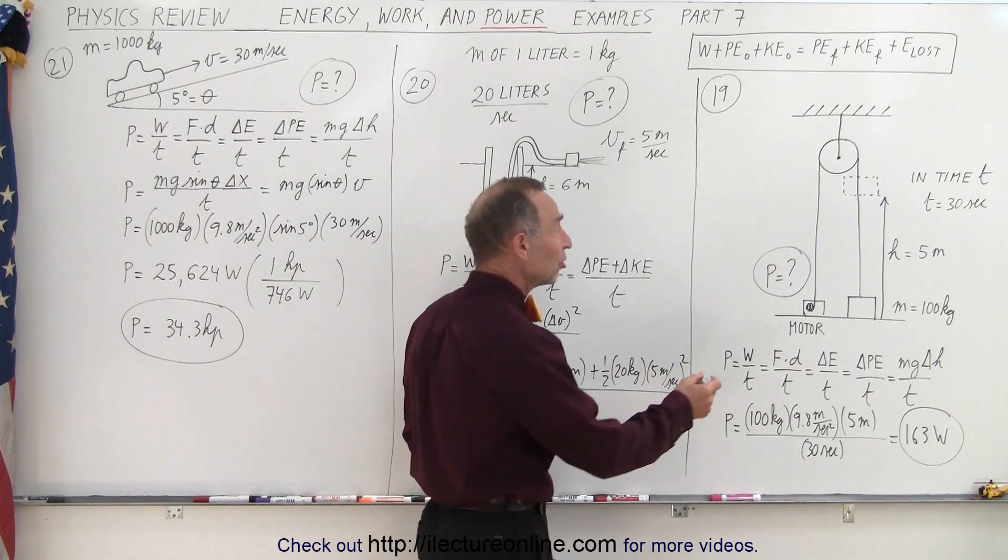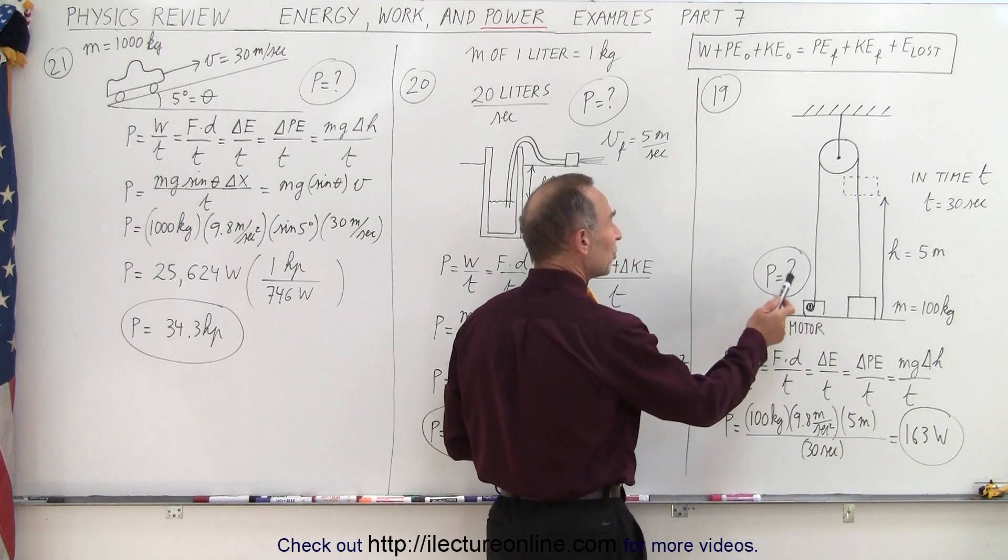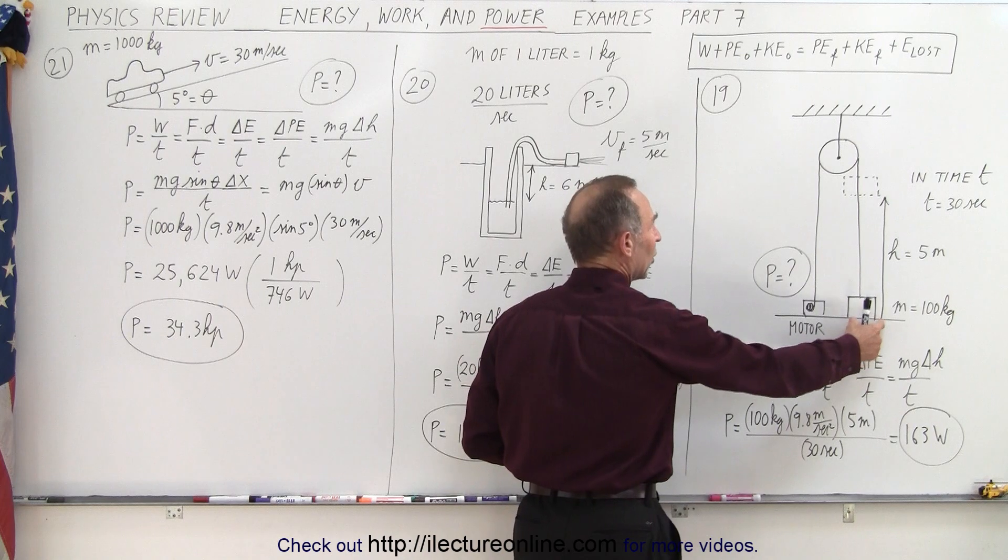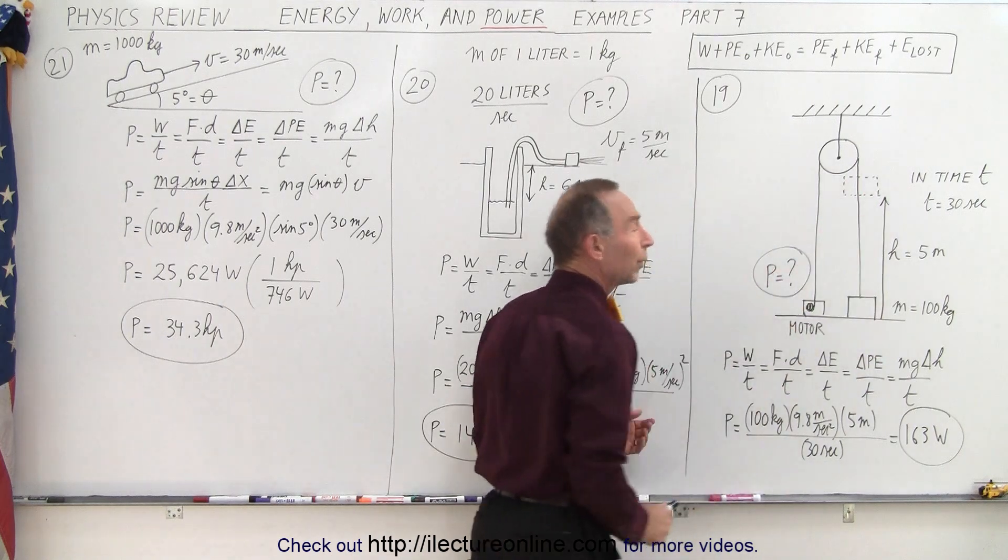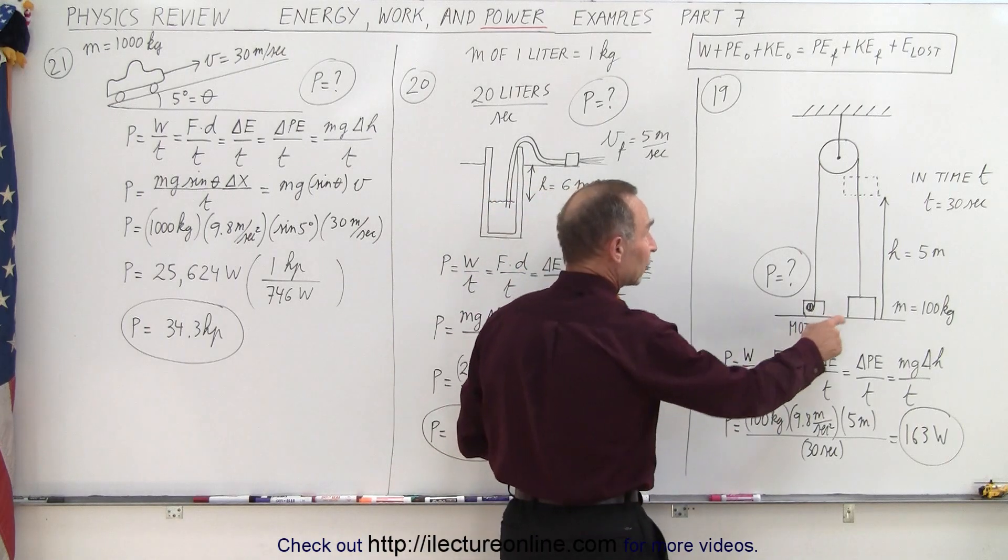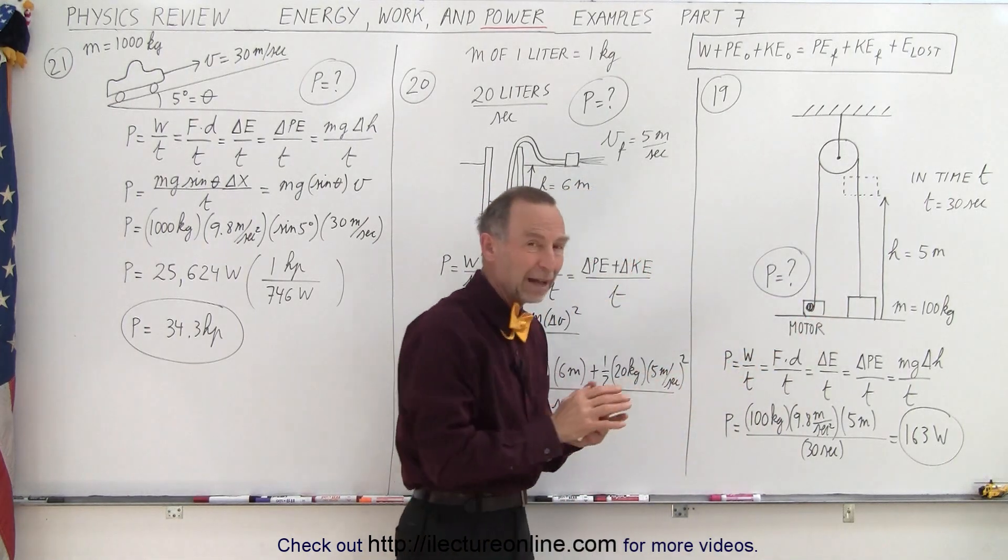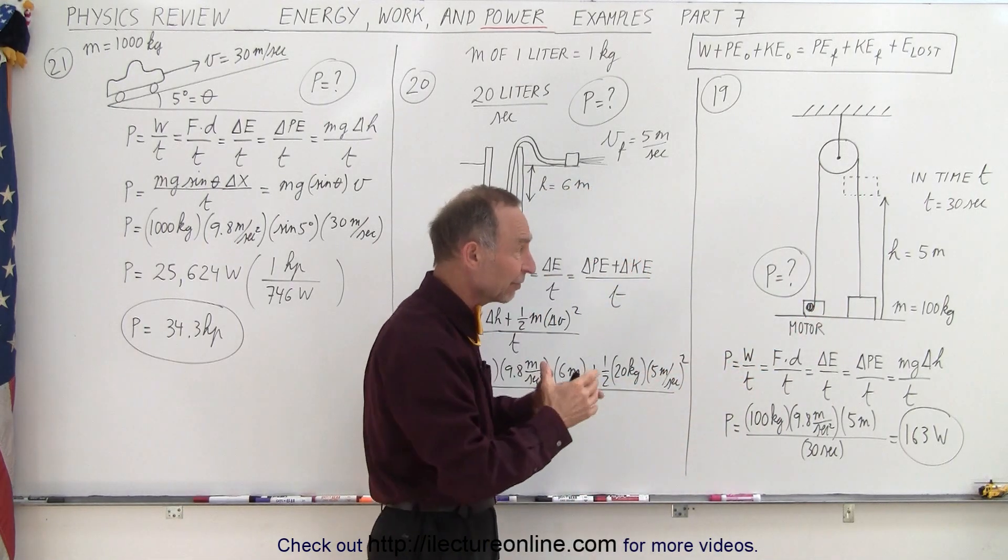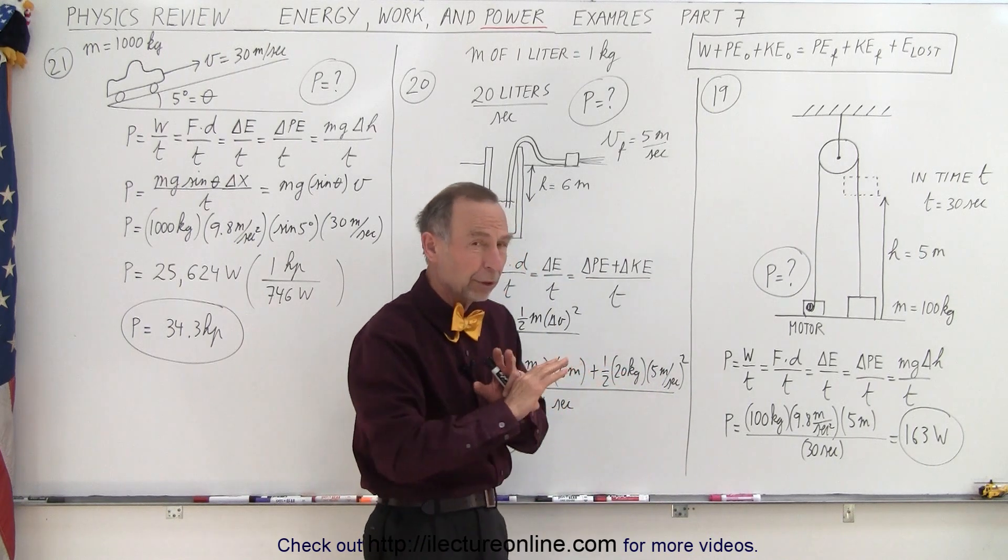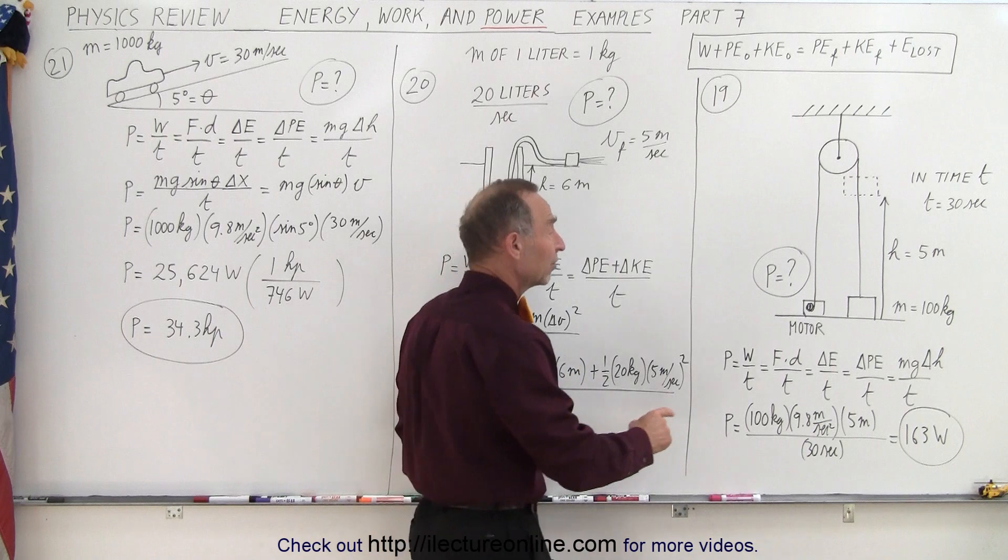And of course in this case the change in energy is the change in potential energy because we're essentially lifting an object from zero height to a height of 5 meters and doing it in 30 seconds. So here you can see that the change in energy, assuming that we have a constant velocity that the velocity is very slow, we're just lifting up very slowly, so we don't have to worry about kinetic energy.